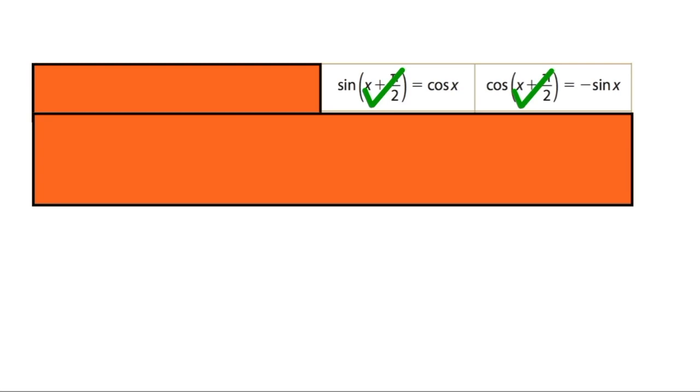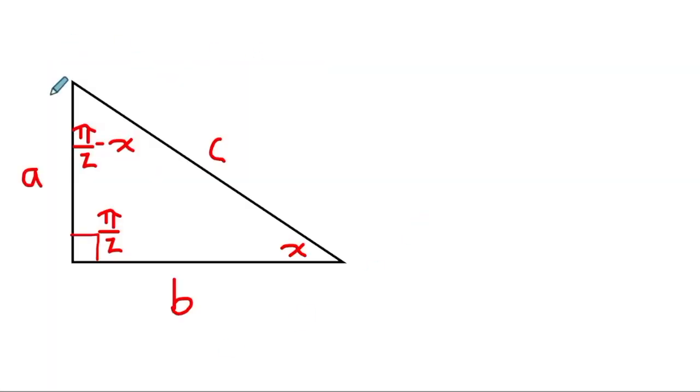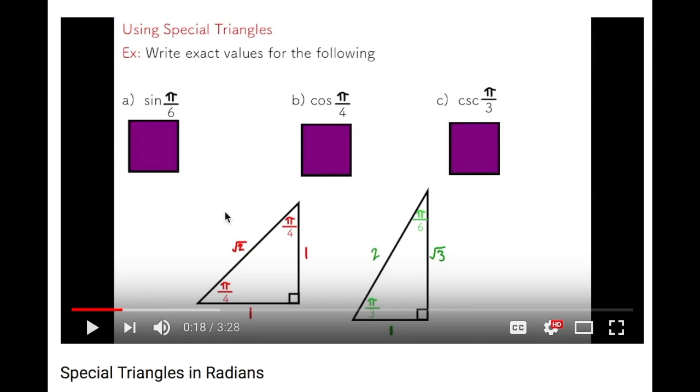So let's switch things up a bit. To prove these two identities, I'm going to take a look at a very special triangle. No, not those special triangles, just a triangle that happens to be kind of special.